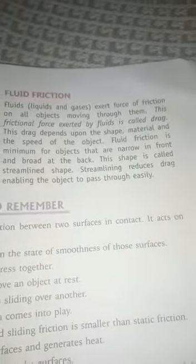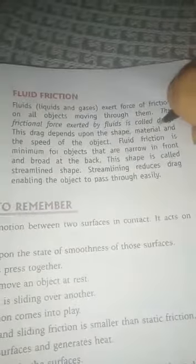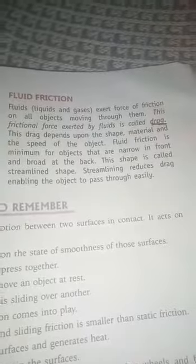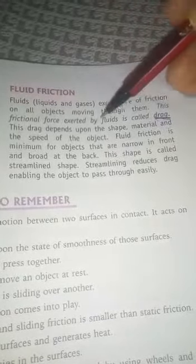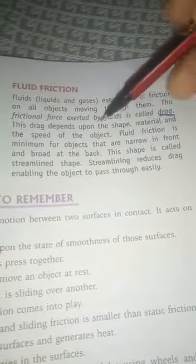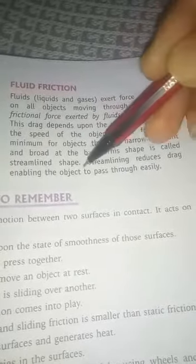The last topic is fluid friction. Fluids exert a force of friction on all objects moving through them. This frictional force exerted by a fluid is called drag. Fluid friction depends on the shape, material, and speed of the object. Fluid friction is minimum for objects that are narrow in front and broad at the back — this shape is called a streamlined shape. Streamlining reduces drag, enabling the object to pass through the fluid easily.